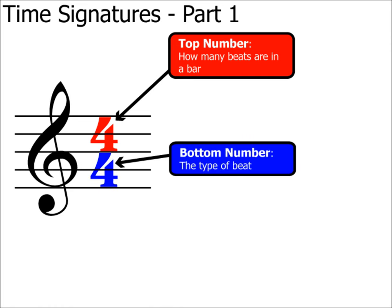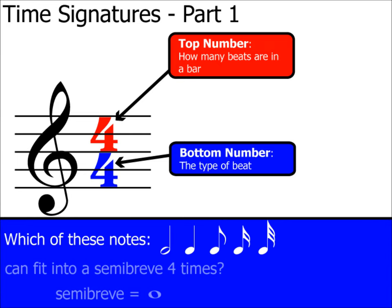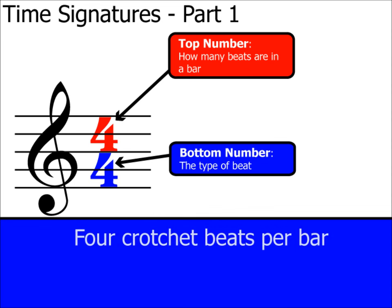It's the bottom number that seems to cause most confusion. The bottom number tells us the type of beat — do we count in crotchets, minims, quavers, or something else? In this example, the bottom number is four. This effectively means which note can fit into a semibreve four times. The answer is a crotchet, as it has a value of one and can fit into a semibreve four times. So we can say that the full meaning of 4/4 is four crotchet beats per bar — the four being the number of beats, the crotchet being the type of beat.